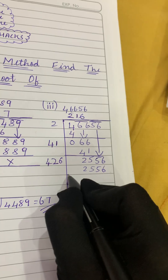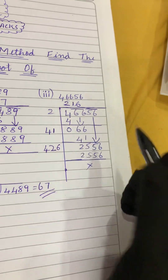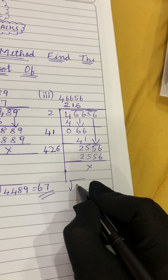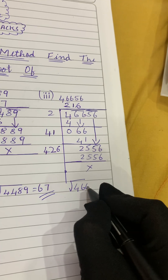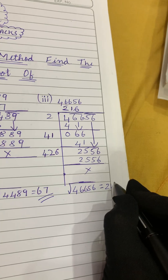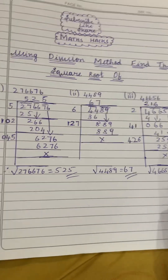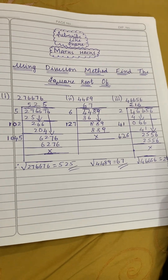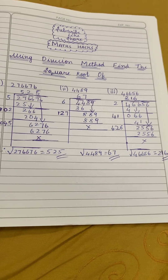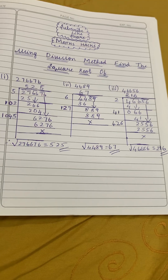We got the exact number, so subtracting gives remainder 0. Our final answer is 216. Therefore the square root of 46656 is 216. If you found this helpful, please subscribe, like, and share. Thank you for watching.